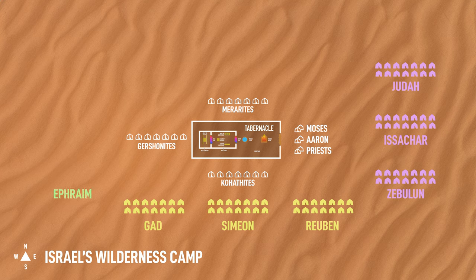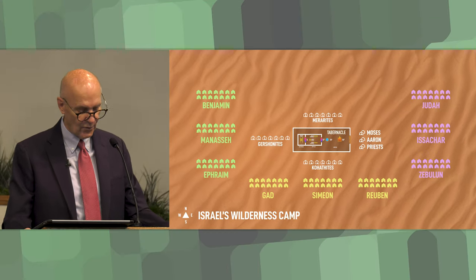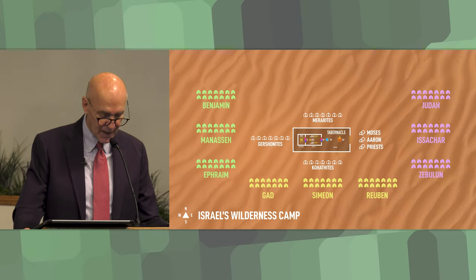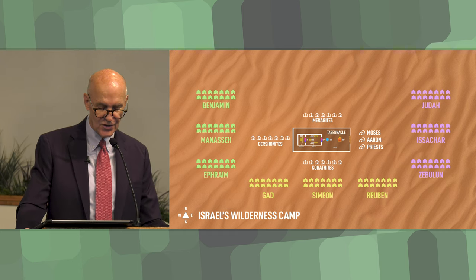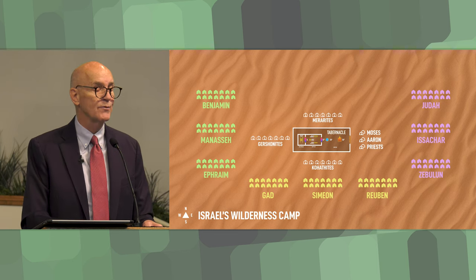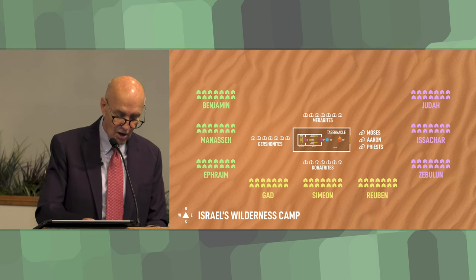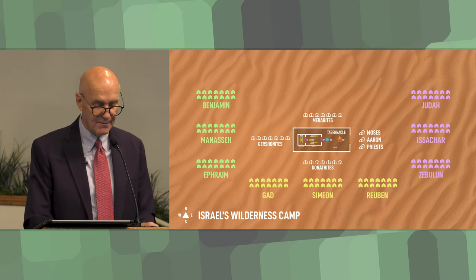Next, there was the western grouping. The western side of the wilderness encampment contained the tribes of Ephraim, Manasseh, and Benjamin, collectively under the banner of Ephraim. Benjamin was born of Jacob's favorite wife, Rachel. Ephraim and Manasseh were the product of Rachel's son Joseph and his Egyptian wife — they were adopted by Jacob as full tribes, as we read in Genesis 48. This group contained 108,100 fighting men.